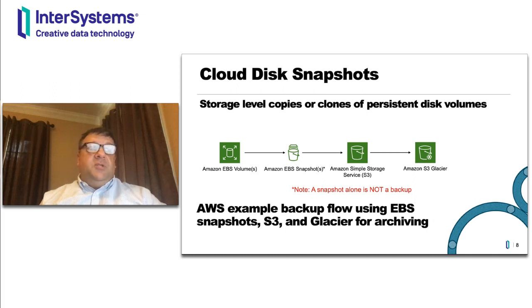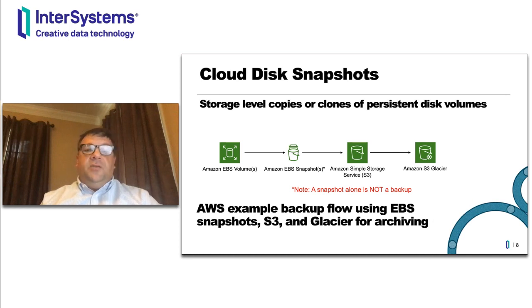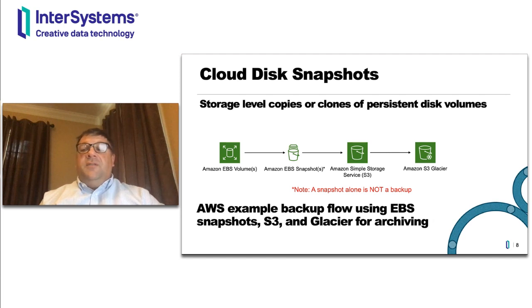Now let's discuss cloud disk snapshots. Using AWS as an example, you can have one or more AWS EBS volumes. In order to create an application-consistent backup prior to initiating an EBS snapshot, it's important to call our external freeze API so that the database iris.dat files are not being written to at the time of the EBS snapshot. Once the snapshot is created, you call our external thaw API so that database updates accumulated in memory can resume being written to the iris.dat files. Then you want to make that snapshot into an actual backup by pushing it into AWS S3, possibly with a lifecycle policy to push it to longer-term archives such as S3 Glacier.